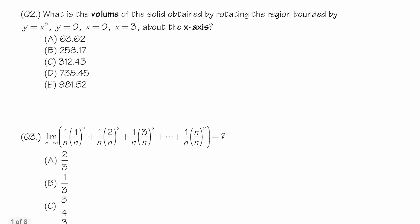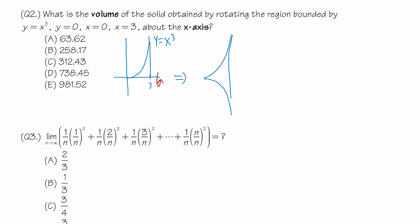Number 2: What's the volume of the solid obtained by rotating the region bounded by y = x³ about the x-axis, from 0 to 3? The curve looks like this — we only care about the positive side. After rotation, the shape looks like this solid with a mirror image and an oval at the end — that's the picture of the solid after rotation.